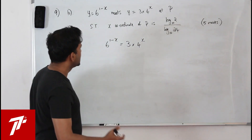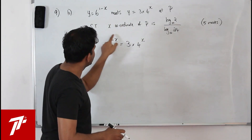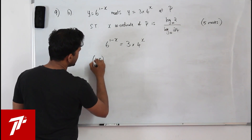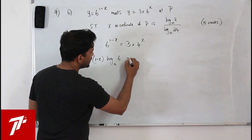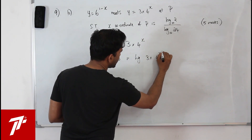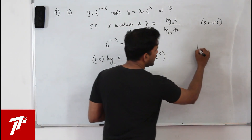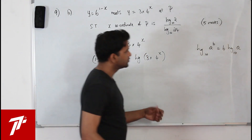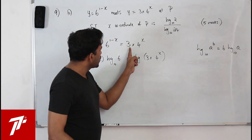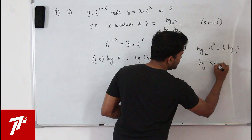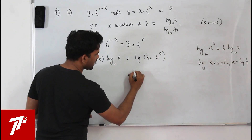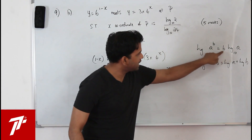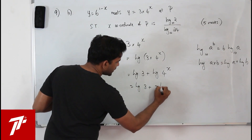This question has 5 marks. Since x is given as an exponent, you need to take logarithm on both sides. When you take logarithm on both sides, you can write: 1 minus x times log 6 to the base 10 equals log of 3 times 4 to the power x. Using the law log(a^b) = b·log(a), and log(a×b) = log(a) + log(b), I write the right side as log 3 plus x log 4.